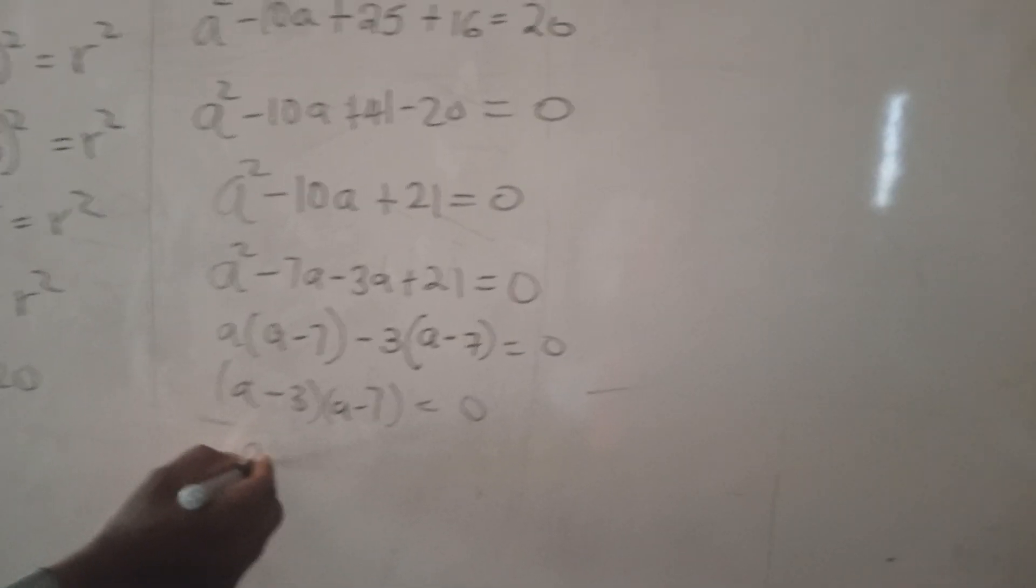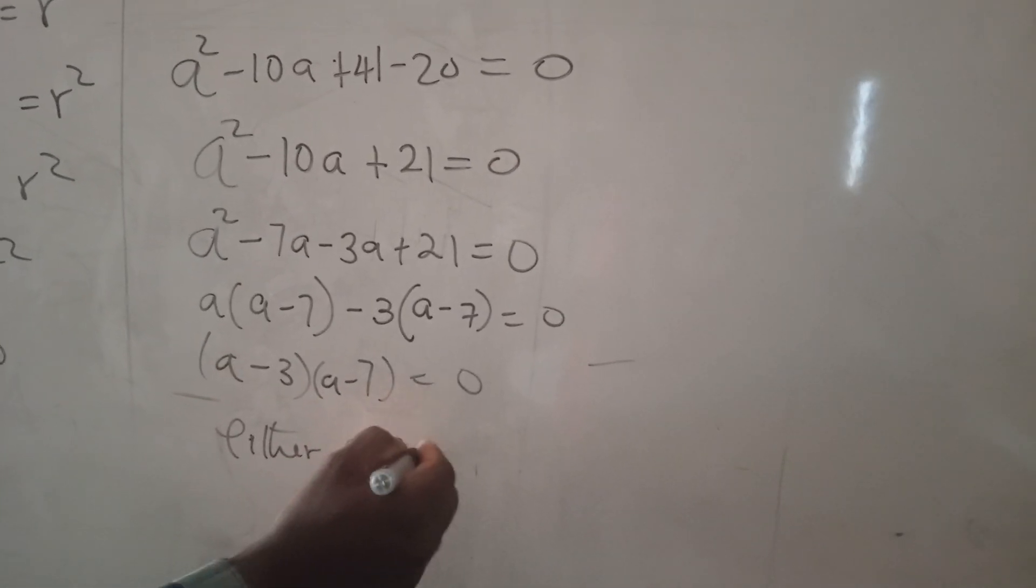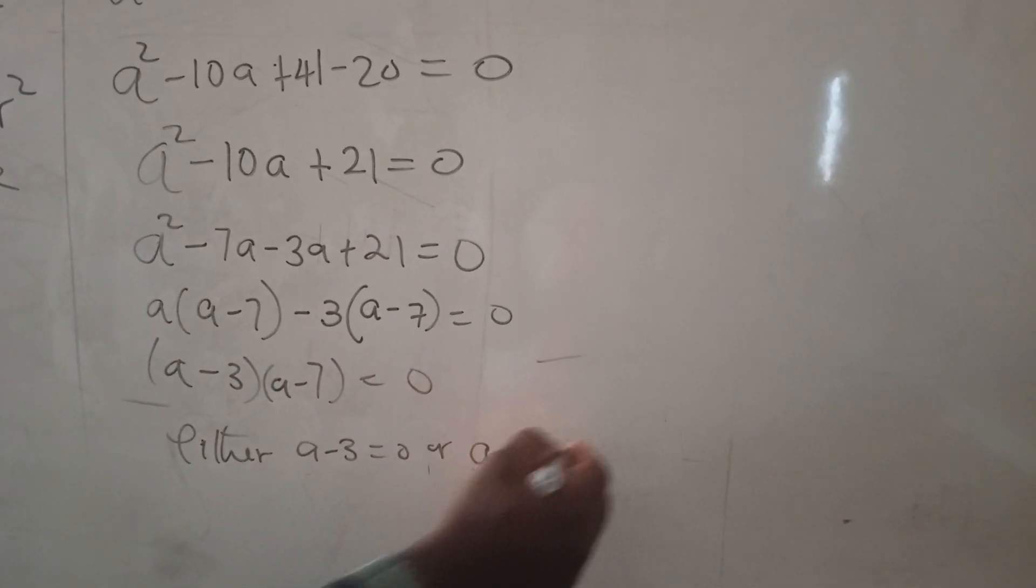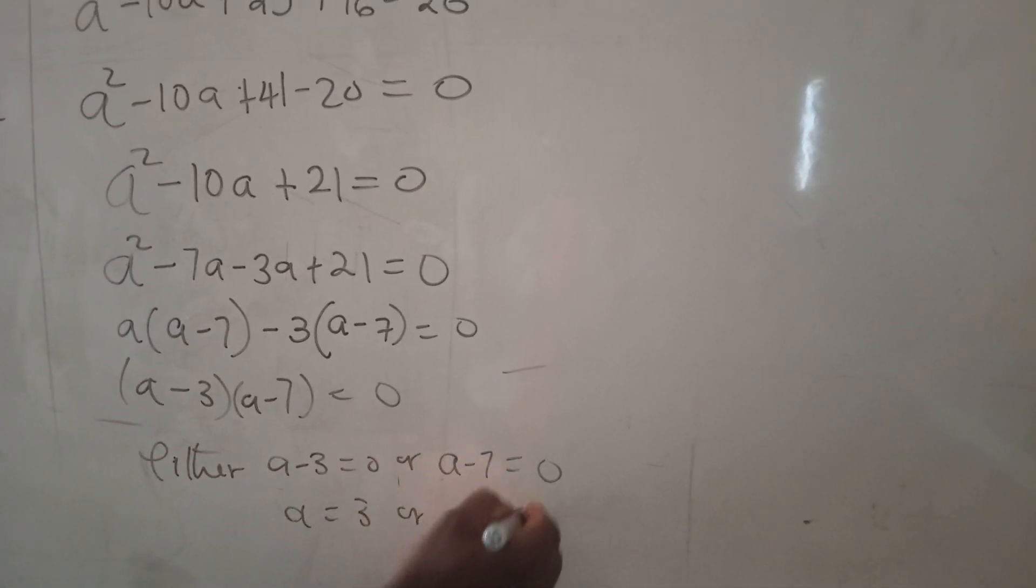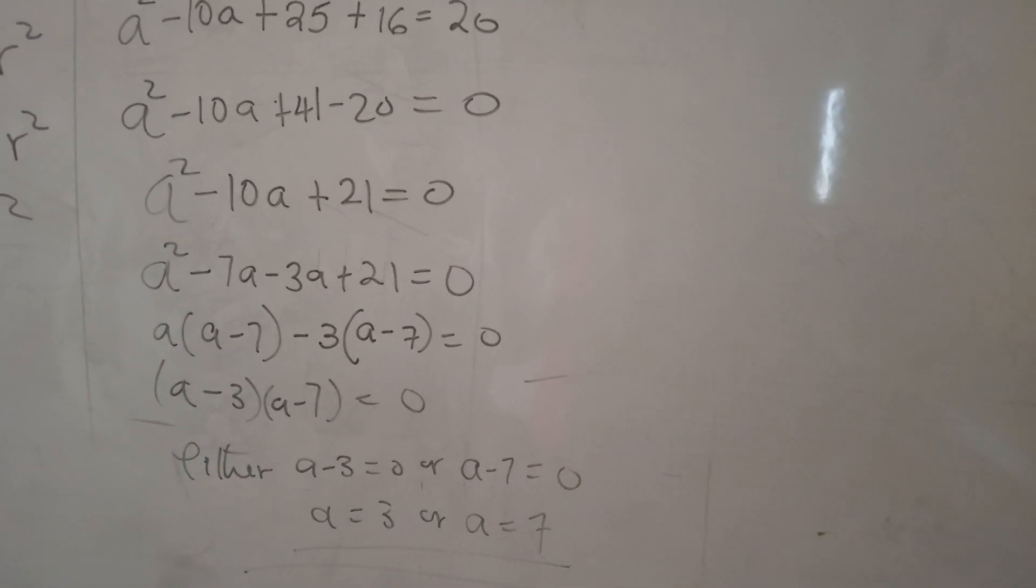Either a - 3 = 0 or a - 7 = 0. So it means a = 3 or a = 7. So those are the possible values of a as per this question.